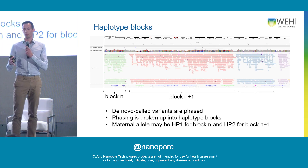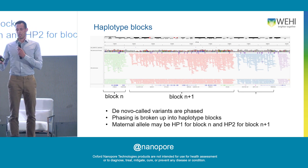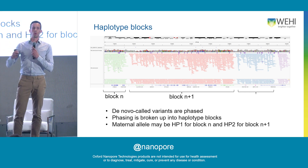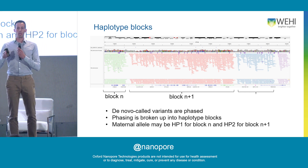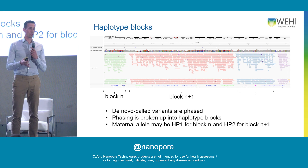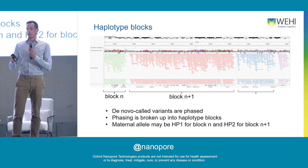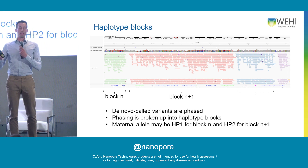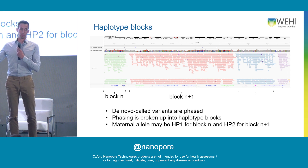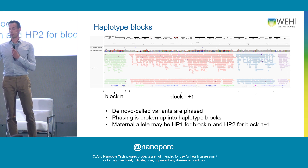To give you a feel for the data, here's what the haplotype reads look like. We can't phase the whole chromosome; instead, phasing is broken up in regions of low SNP density, giving us haplotype blocks. In block N, the maternal allele might be haplotype 1, whereas in the following block the maternal allele might be haplotype 2 — so you've got to keep that in mind.